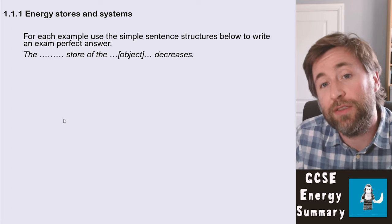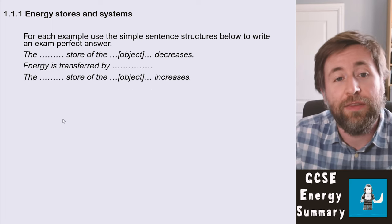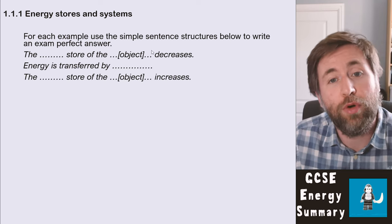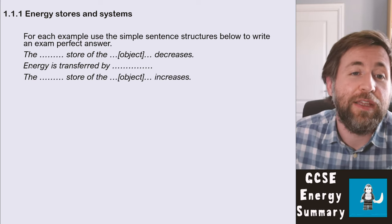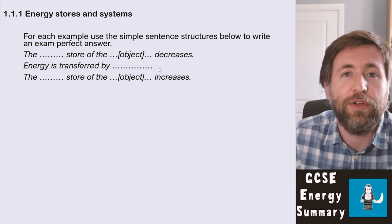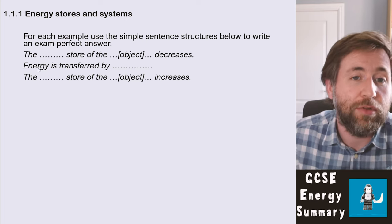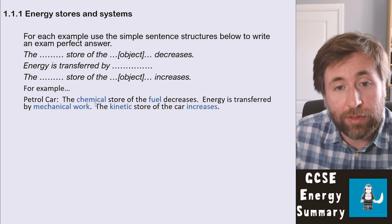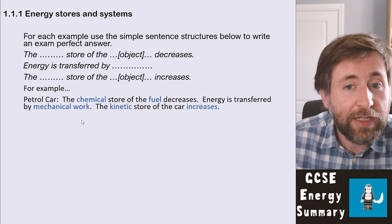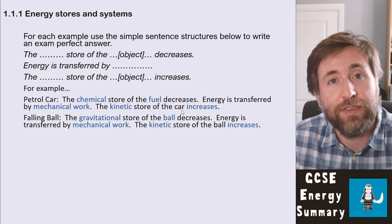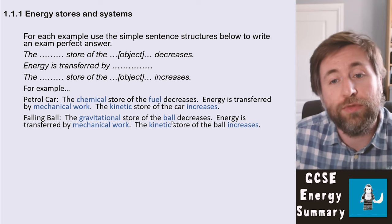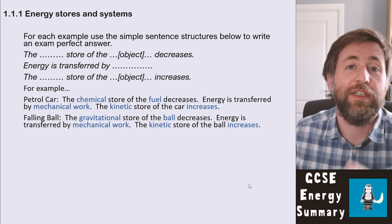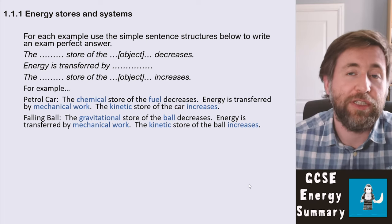The sentence structure is: 'The [something] store of the [object] decreases, the energy is transferred by [method], the [something] store of the [object] increases.' For example, for a petrol car: the chemical store of the fuel decreases, the energy is transferred by mechanical work, the kinetic store of the car increases. For a falling ball: the gravitational store of the ball decreases, energy is transferred by mechanical work, the kinetic store of the ball increases.